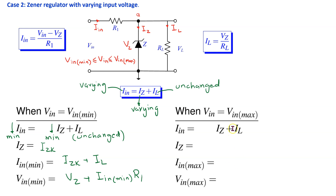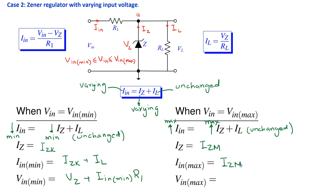To find VIN_maximum: when the input voltage is at its maximum, IIN is at its maximum. Since IL is unchanged, IZ is forced to its maximum value IZM. Thus IIN_max = IZM + IL, and VIN_max = VZ + IIN_max × R1. This shows how to find the range of input voltages for which the Zener will regulate the output to VZ.